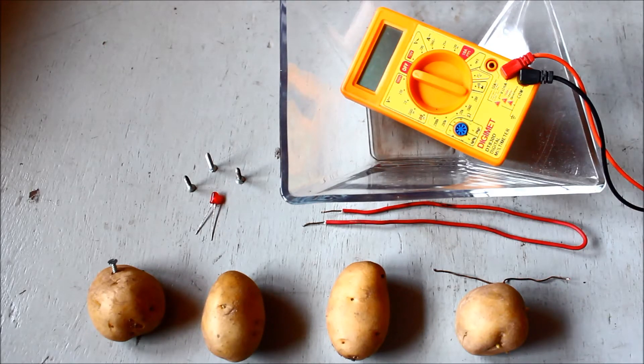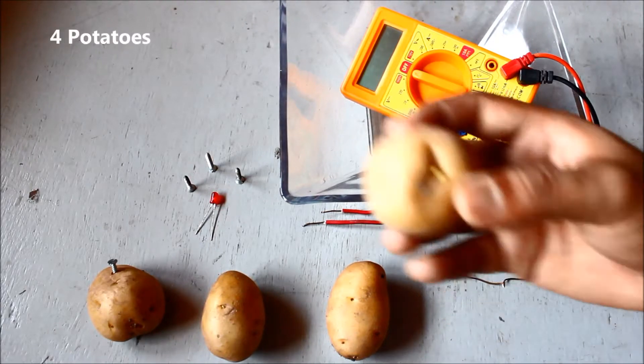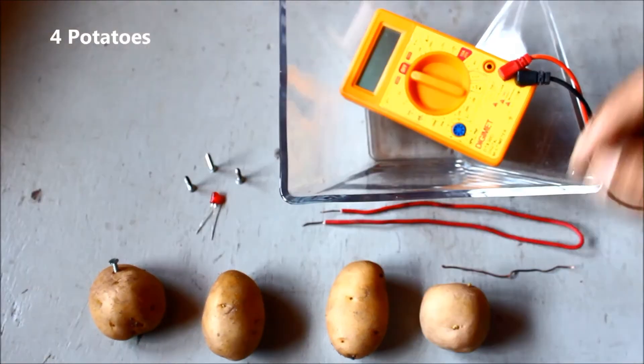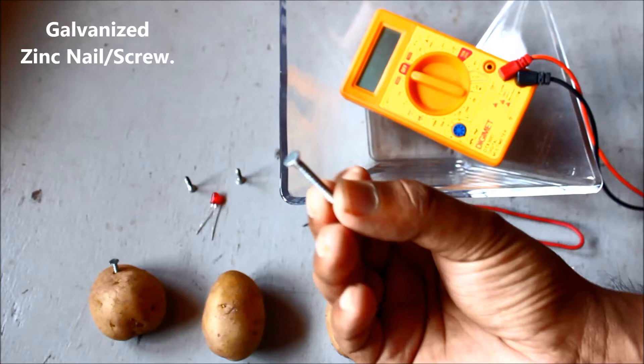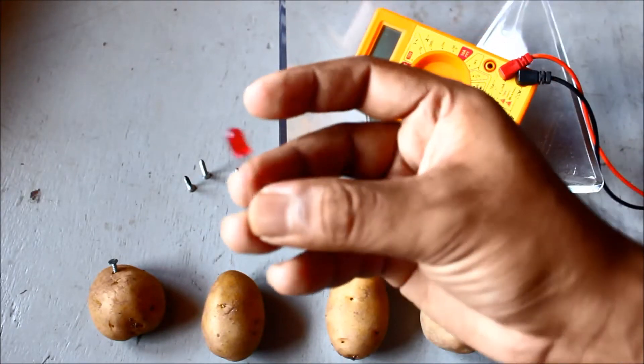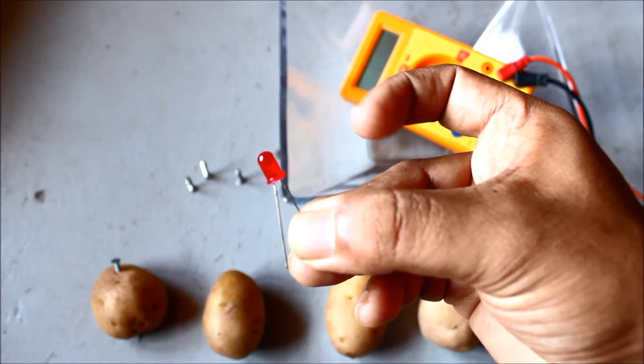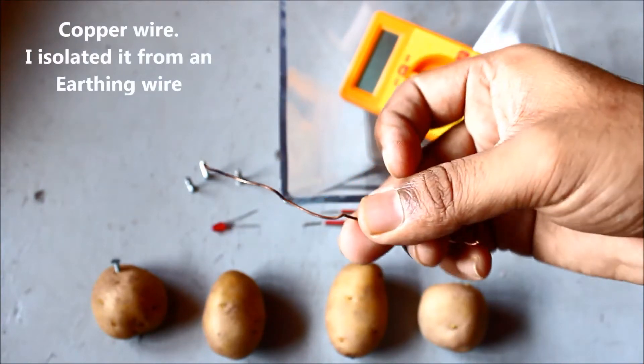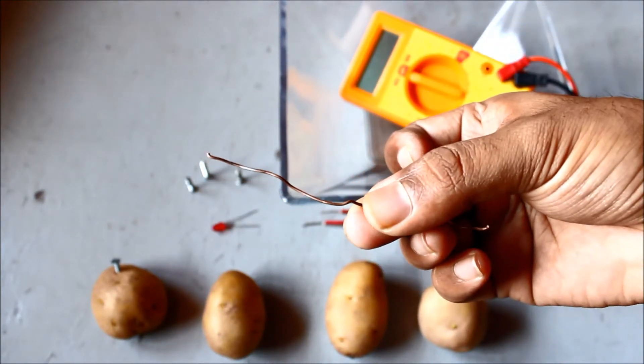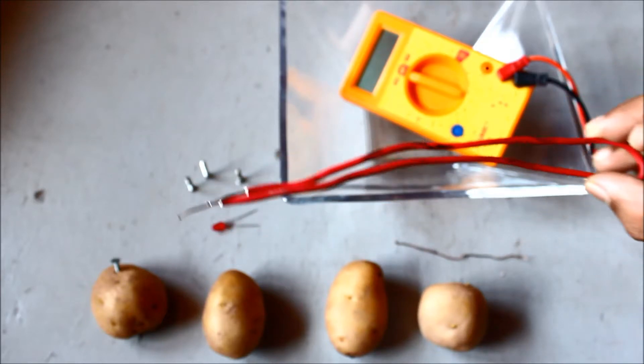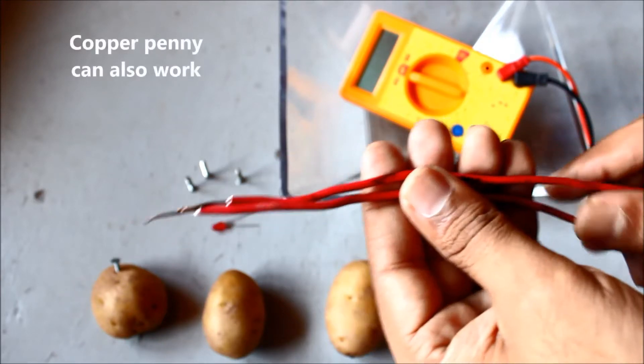So the ingredients, the prerequisites that we will be requiring for this project are four potatoes, then we will require galvanized zinc nail, LED bulb preferably in red color, copper wire which has been isolated from an earthing wire. This is the earthing wire that I have used to isolate the wire used for earthing.